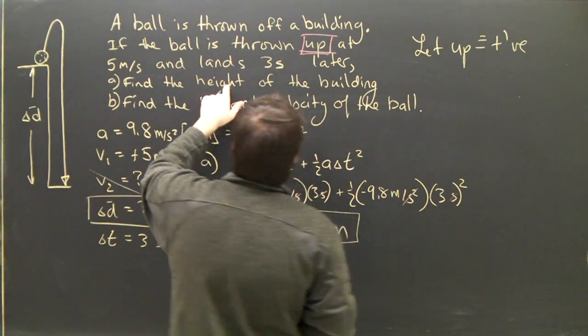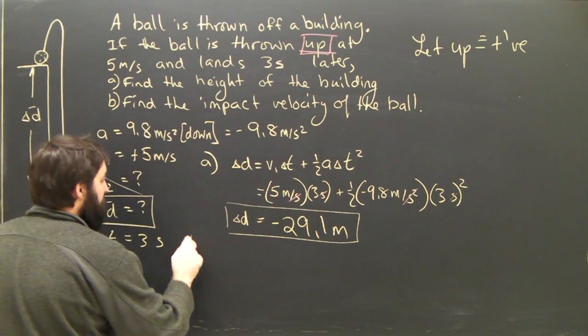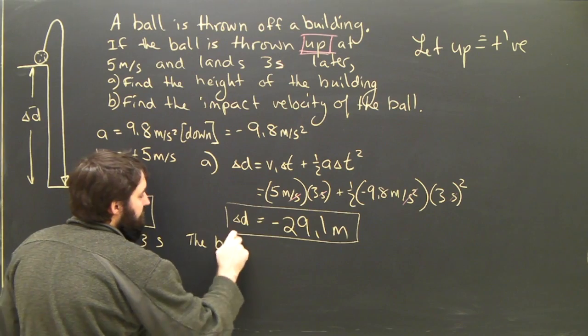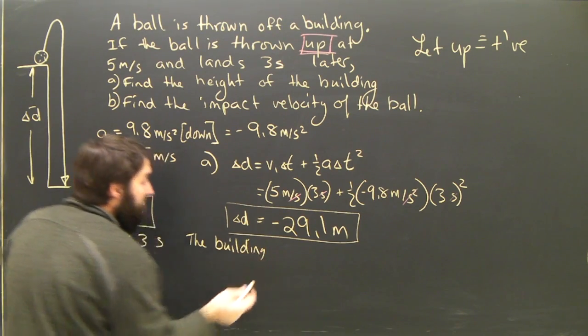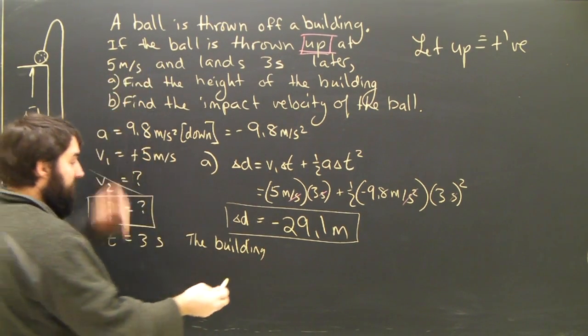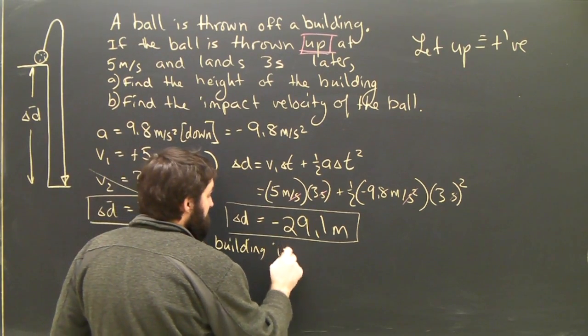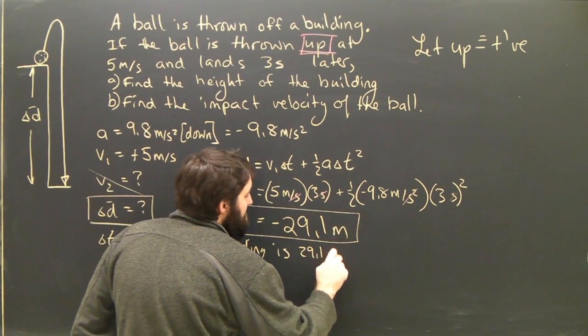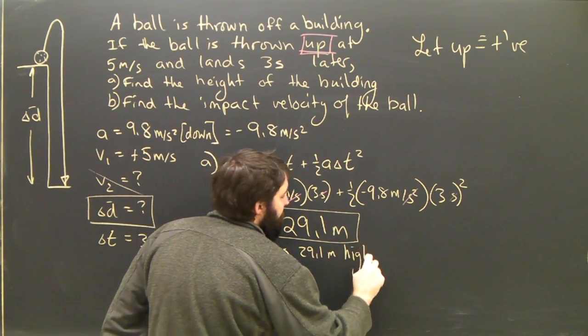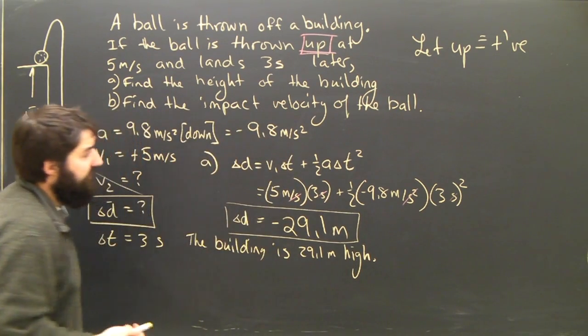The question, though, says, what is the height of the building? So, the building, since the ball fell 29 meters, the building must be 29 meters high. The building is 29.1 meters high. And that's my answer to A.